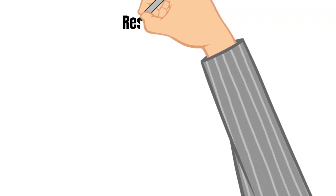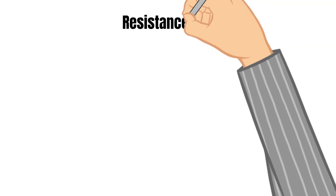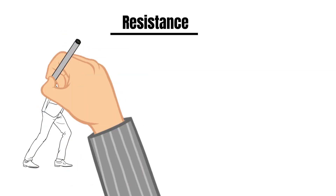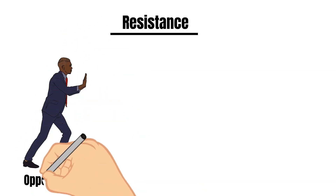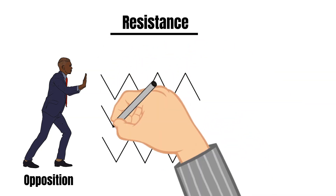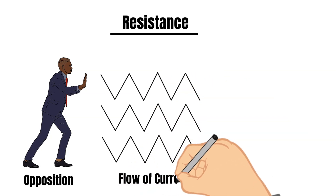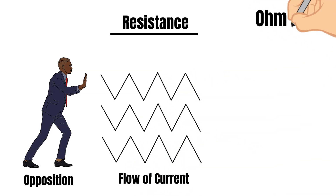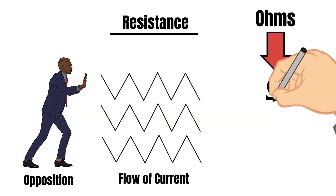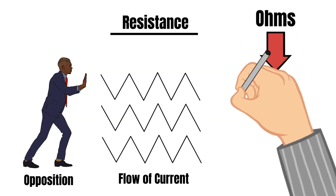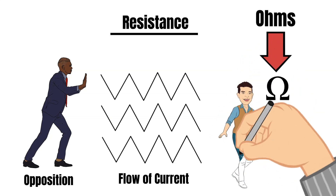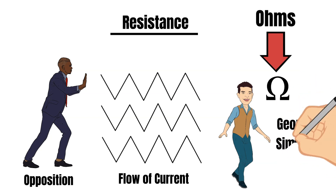Let's begin by talking about the first unit of measurement, and that is the unit used to measure resistance. Resistance in electricity is the measurement of opposition to the flow of current in a circuit. This is measured in ohms, which is symbolized by the Greek letter omega. Ohms are named after George Simon Ohm, a German physicist who studied the relationship between voltage, current, and resistance.